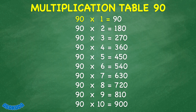90 times 1 equals 90. 90 times 2 equals 180. 90 times 3 equals 270. 90 times 4 equals 360. 90 times 5 equals 450. 90 times 6 equals 540.